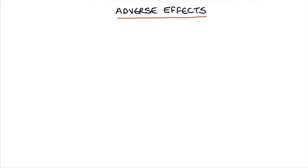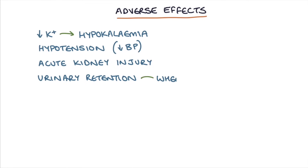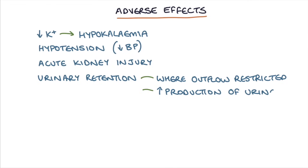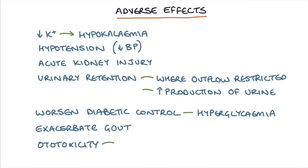There are a few notable adverse effects. They drop the potassium level in the blood, causing hypokalemia, because potassium is being excreted in the urine. They can cause hypotension due to reduced circulating volume, and can cause an acute kidney injury. They can cause urinary retention because so much more urine is produced that it can't be passed quickly enough. They can worsen diabetic control and cause hyperglycemia, they can exacerbate gout, and they have been known to cause ototoxicity — damage to the inner ear.